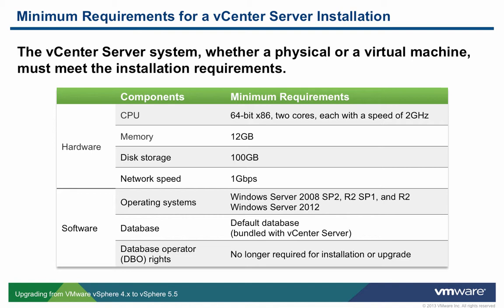The vCenter server requires a minimum of two 64-bit cores, 12 gigabytes of RAM, 100 gigabytes of storage, and a gigabit NIC. Note that there are specific versions of Windows Server that are supported by vCenter 5.5. In this demonstration, we will leverage the default database which is bundled with vCenter server. In addition to the default Express database, vCenter 5.5 also supports Microsoft SQL Server, Oracle, and IBM DB2.